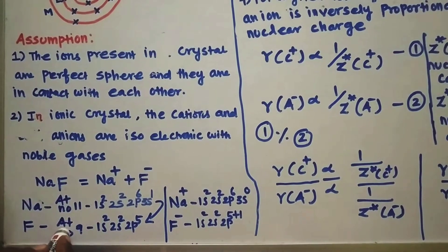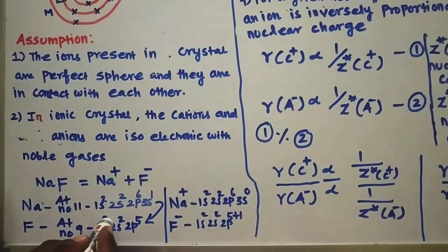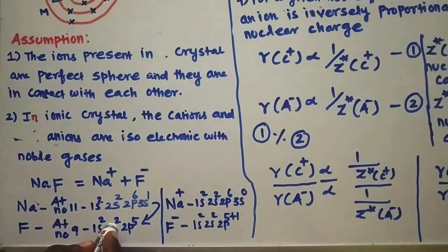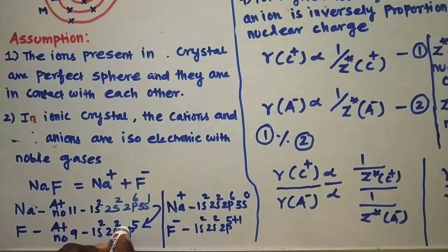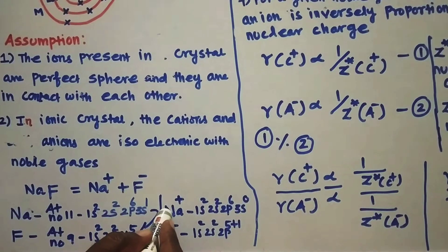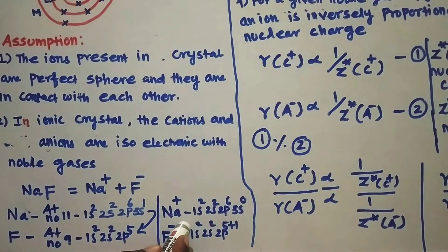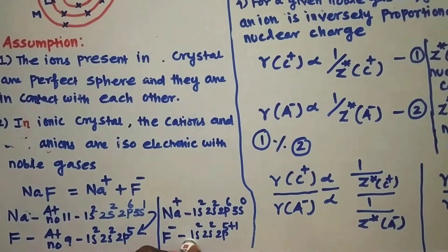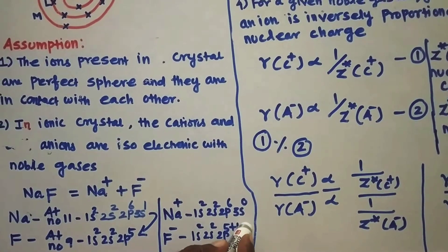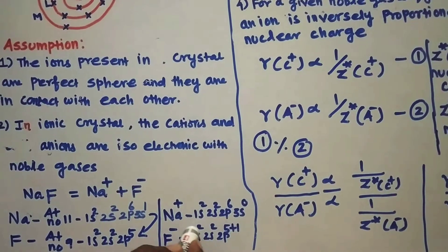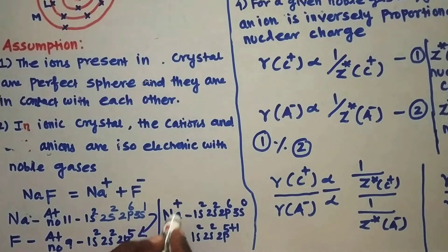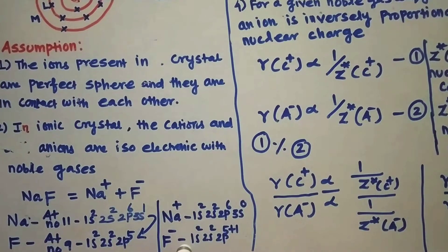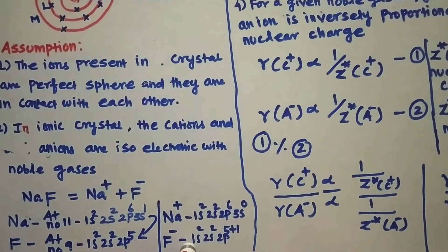Now let us consider fluorine. Its atomic number is equal to 9. Its electronic configuration is 1s², 2s², 2p⁵. Now sodium undergoes oxidation; therefore sodium loses 1 electron and fluorine gains 1 electron. As a result, sodium forms Na⁺ ion with configuration 1s², 2s², 2p⁶, 3s⁰, and fluorine forms F⁻ ion with configuration 1s², 2s², 2p⁶. So we have sodium ion and fluoride ion.